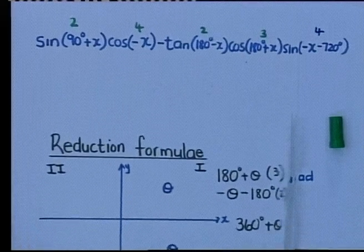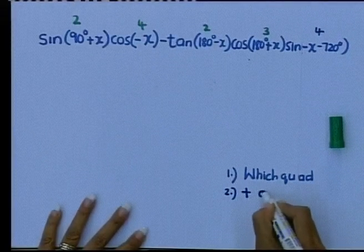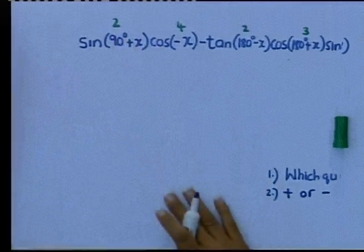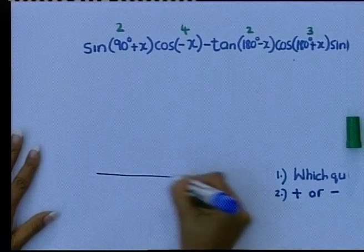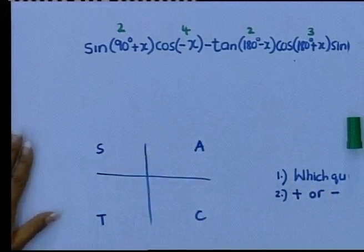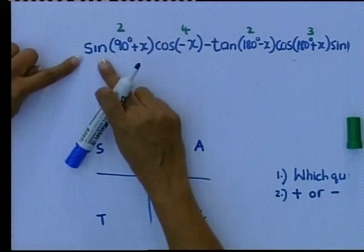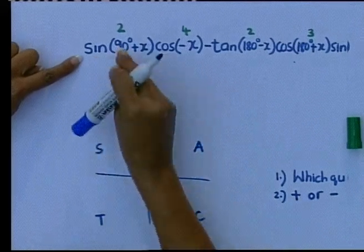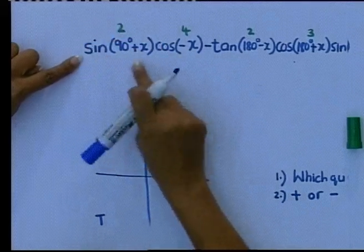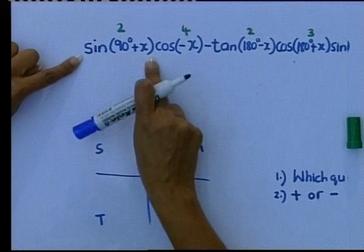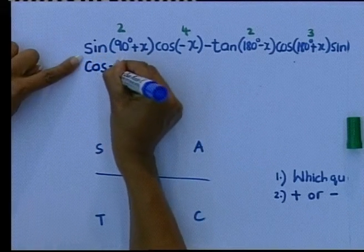After you have your quadrants, you ask: is my function positive or negative? Most important question. Now, sin of (90 plus x) is in the second quadrant. How is sin in the second quadrant? All stations to Cape Town — sin is positive in the second quadrant. Very important. What happens to the sin? It changes to cos — it can't remain sin because it's 90 plus. We just did this as the introduction to the lesson: the minute you see 90 plus or 90 minus, sin goes to cos. So I'm going to write: this is the cos of x, and immediately put it in a bracket.